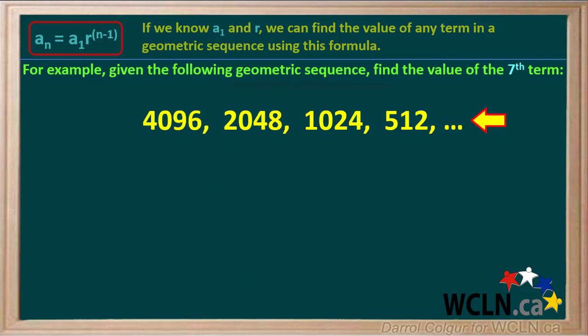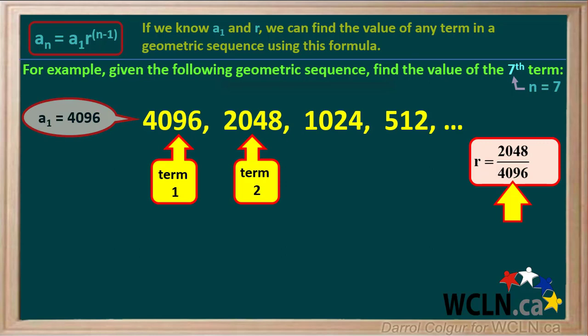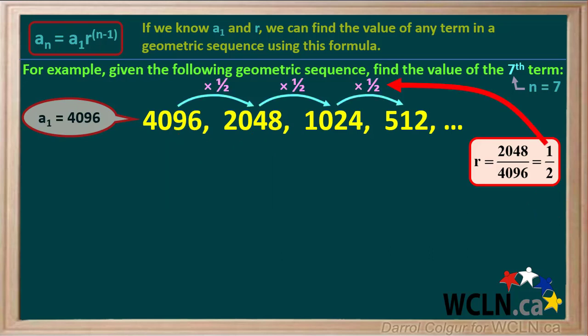Let's do another example. We're given this geometric sequence and asked to find the value of the seventh term. Because it's the seventh term, we can state that n equals 7. The value of the first term, a1, is 4096. The value of the common ratio, r, can be found by dividing term 2 by term 1, which is 2048 divided by 4096. This works out to 1 half, so r equals 1 half. We can see that multiplying each term by 1 half gives us the next term — for example, 4096 times 1 half is 2048, and 2048 times 1 half is 1024, and so on.